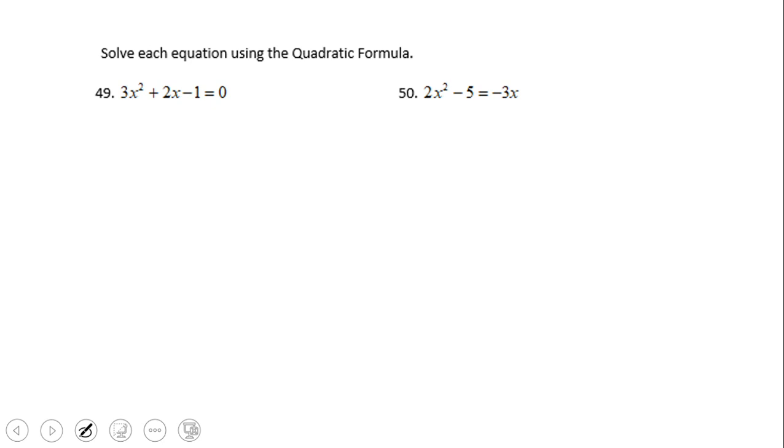Now let's take a look at these two last problems. We're going to solve this equation using the quadratic formula. So we have here b squared minus 4ac, the discriminant. That will be 2 squared minus 4 times 3 times negative 1. That will be 4 plus 12, which is 16. The discriminant is 16, so we do have two real solutions.